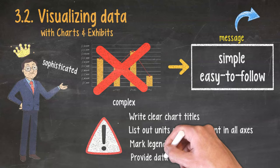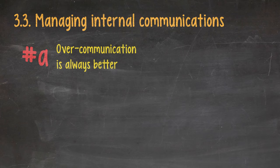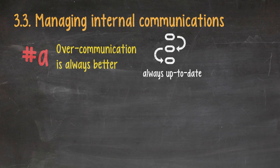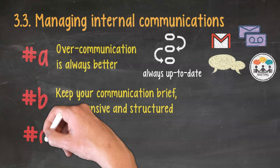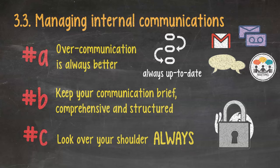3.3. Managing internal communications. Rule A. Overcommunication is always better. Keep that information flowing. Make sure that your team is up to date with at least the broad outlines of your work stream and your boss is up to date with your team's progress. There are many channels for this. Email, voicemail, messaging, small talks during cigarette breaks, meetings, etc. Rule B. Keep your communication brief, yet comprehensive and structured. Rule C. Look over your shoulder, always. You never know who is listening. Remember that your client's confidentiality is a must.